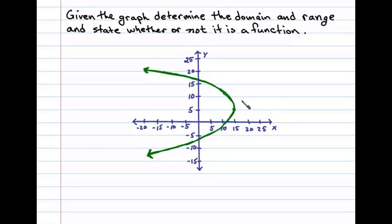Given the graph, determine the domain and range and state whether or not it's a function. Now any point on the graph is an ordered pair x comma y, and the domain is defined to be the set of all possible x values.